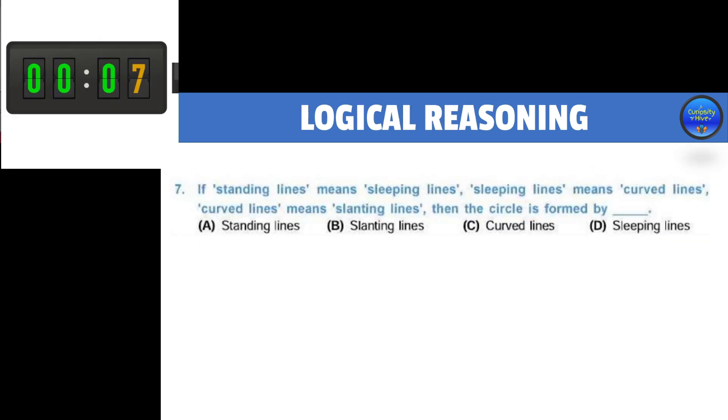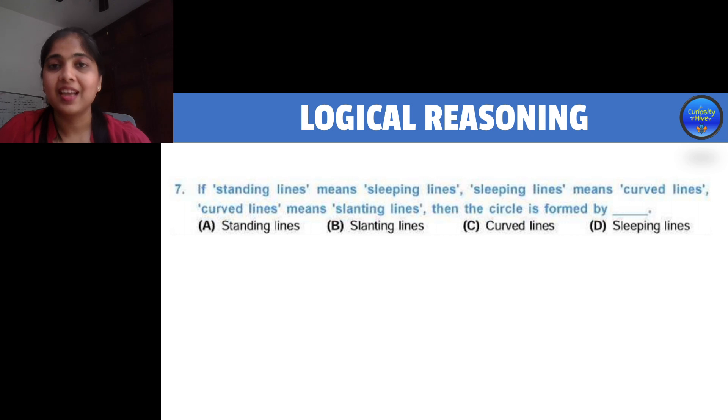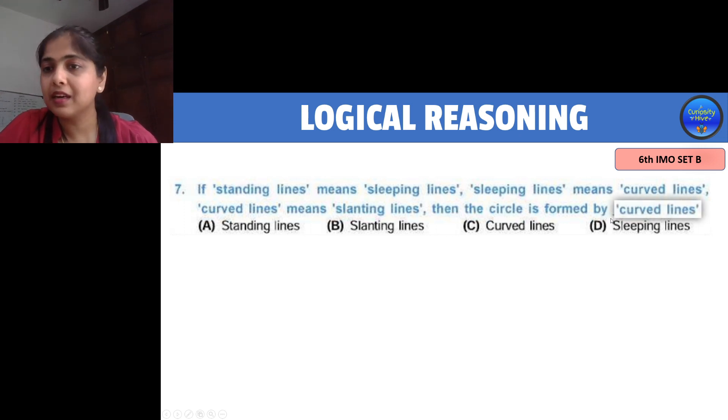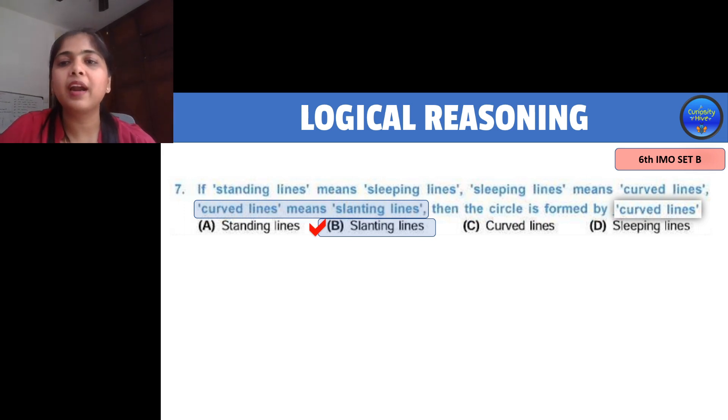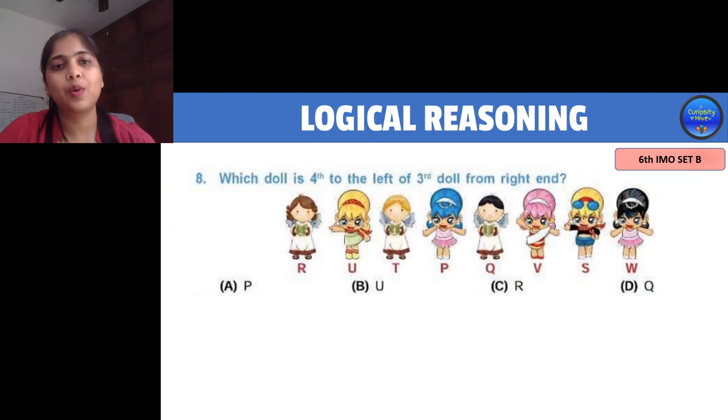Let's head to the next question. These relationship questions are very popular in IMO logical reasoning. All you need to do is find the final answer and then get the relationship given for that final answer. The question asked is, the circle is formed by what? The circle is formed by curved lines. Let's look for what is the relationship given for curved lines. It says curved lines means slanting lines. Hence our right answer is option B, slanting lines.